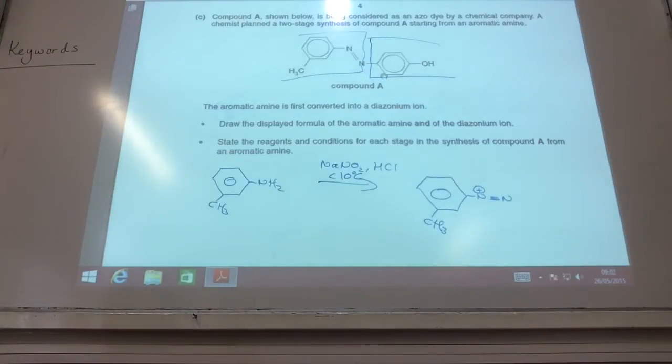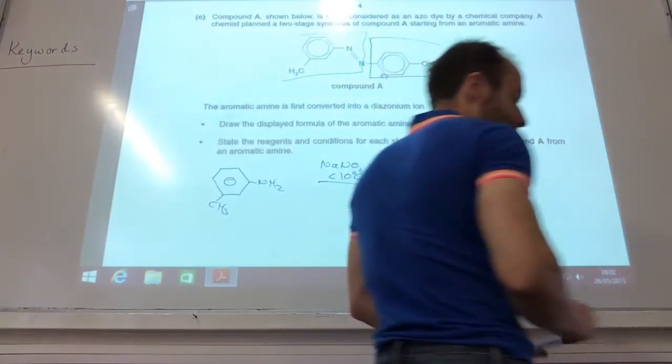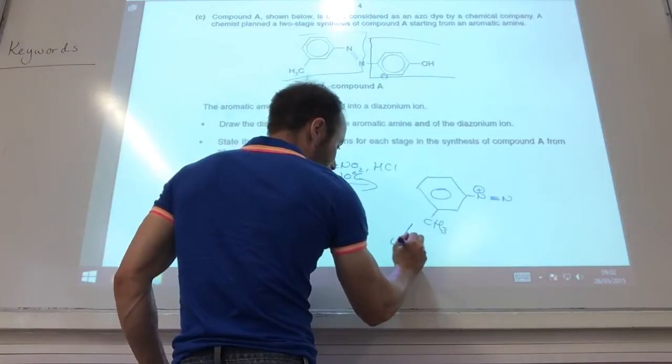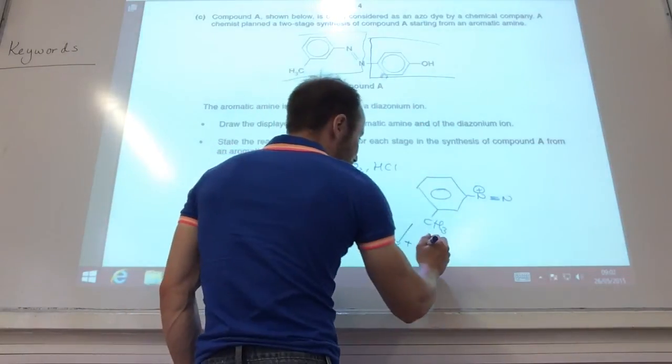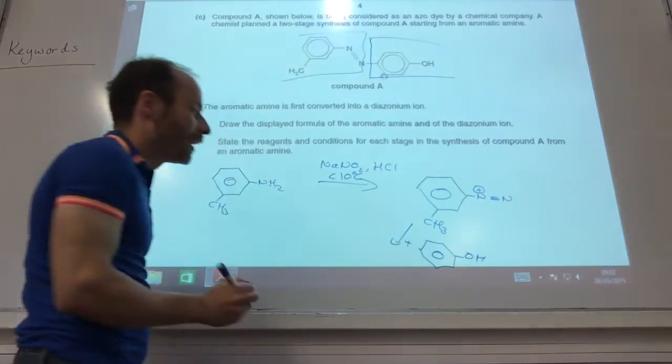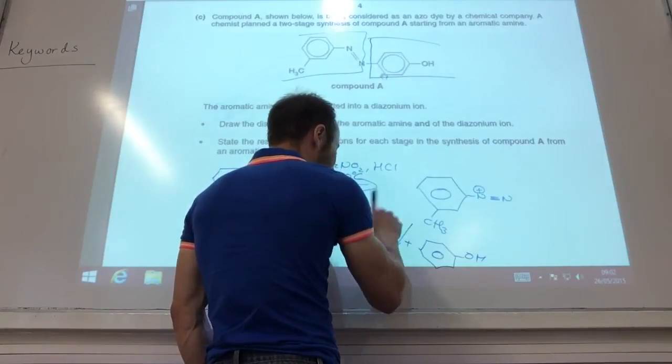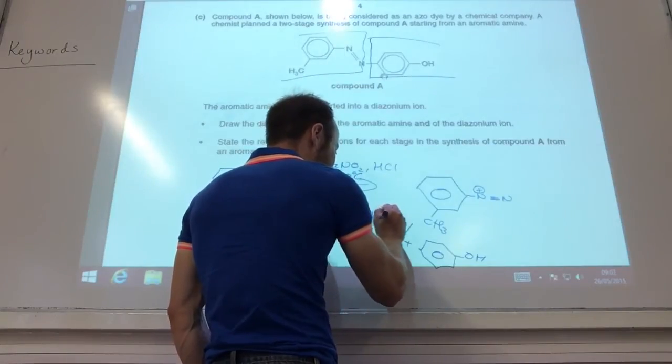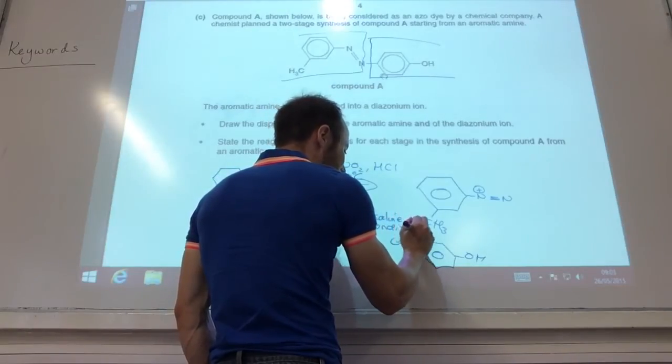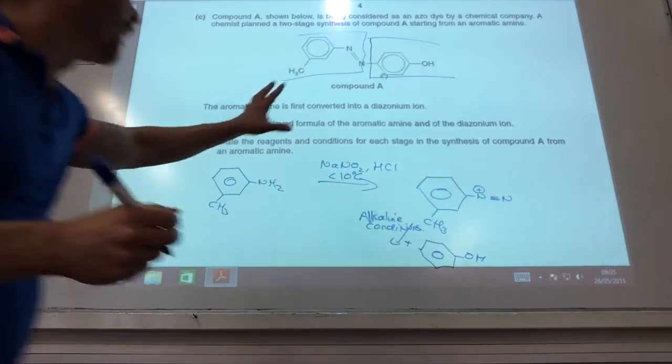Right, once I've got that one, I then need to add in my phenol. So the next stage would be to add phenol. And that will give me my azodye. That needs to be done in alkaline conditions, so normally sodium hydroxide solution, to give me my compound A.